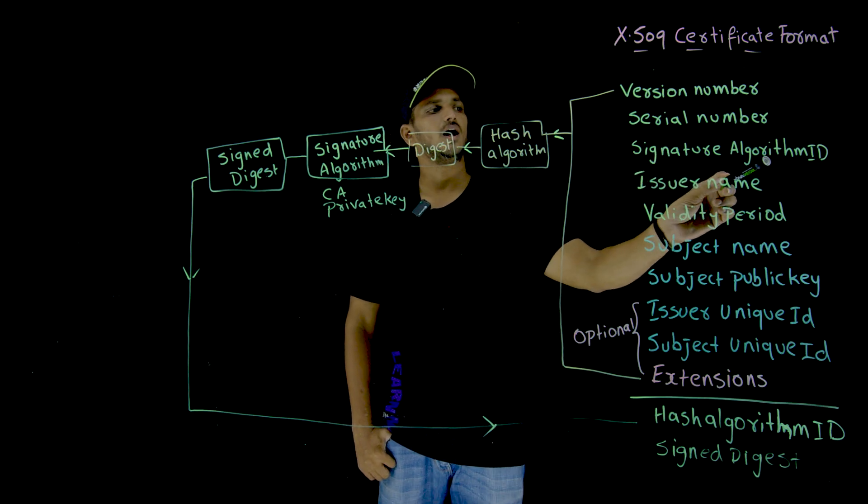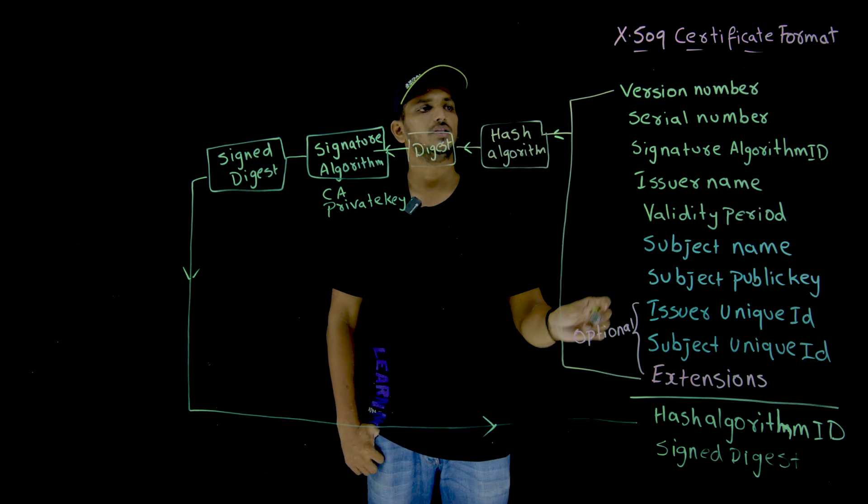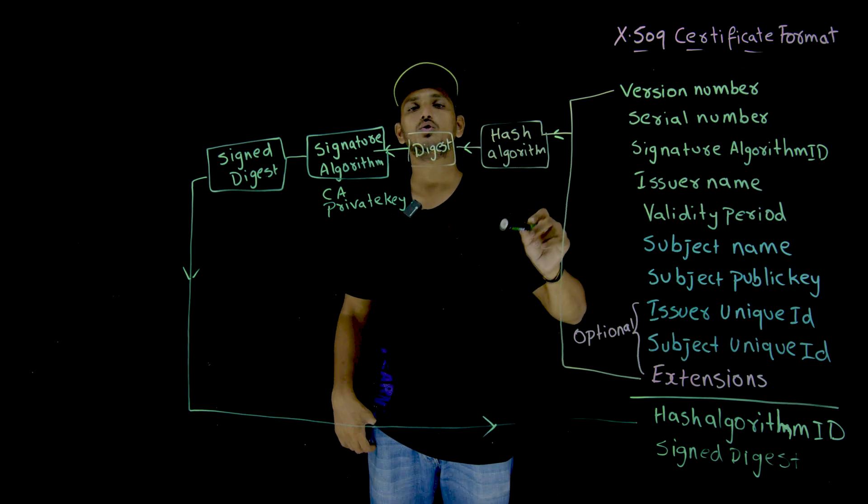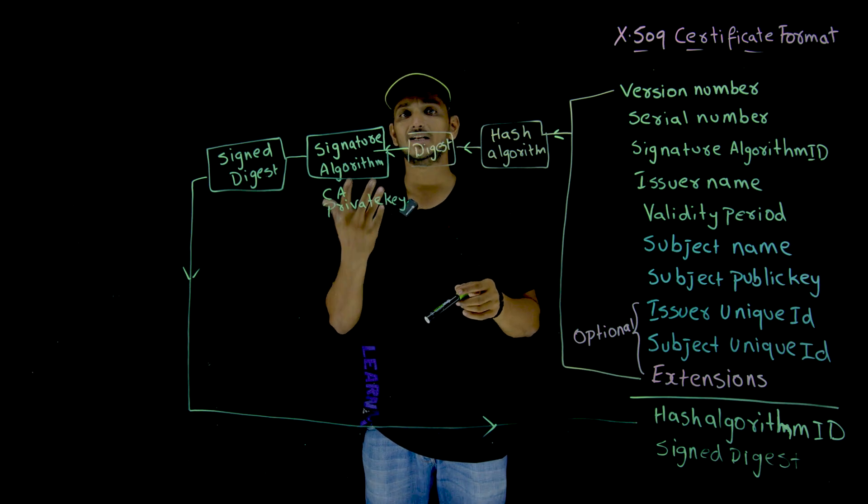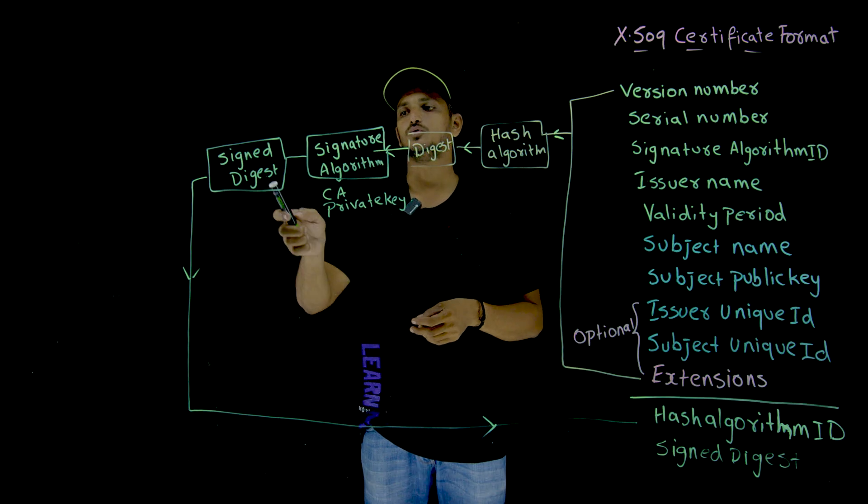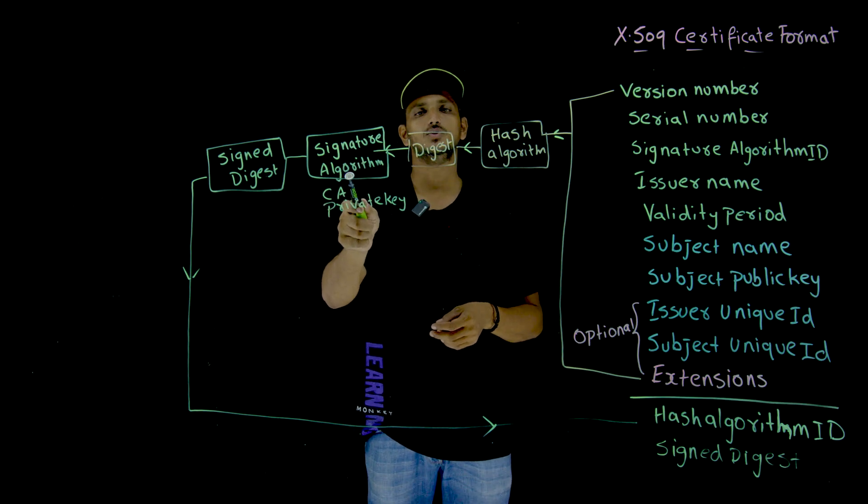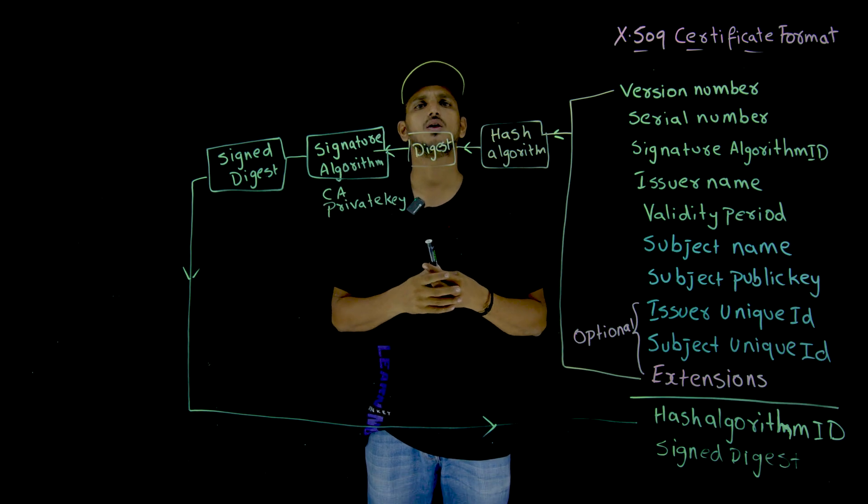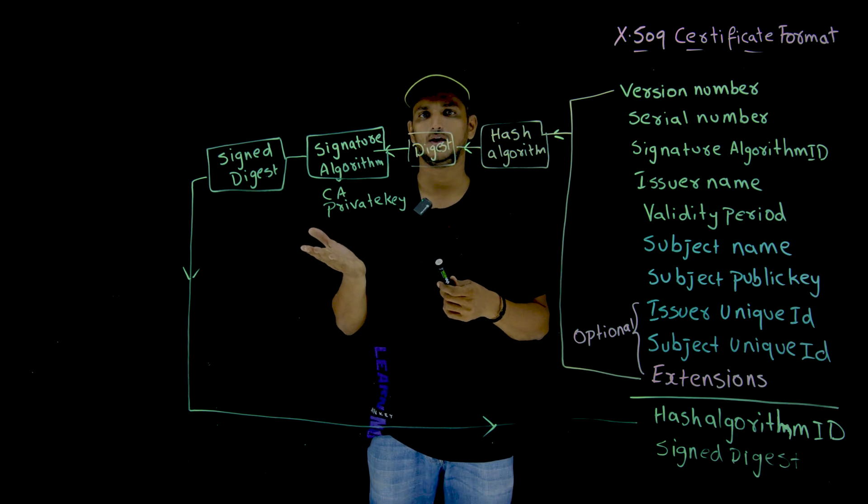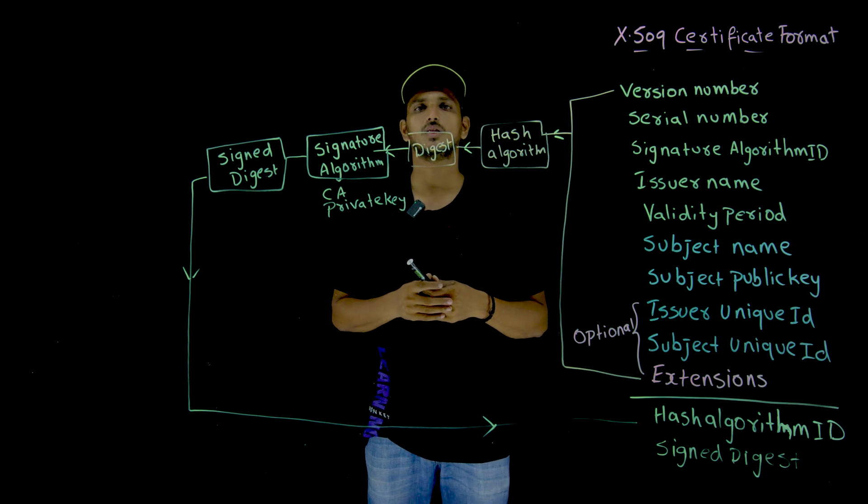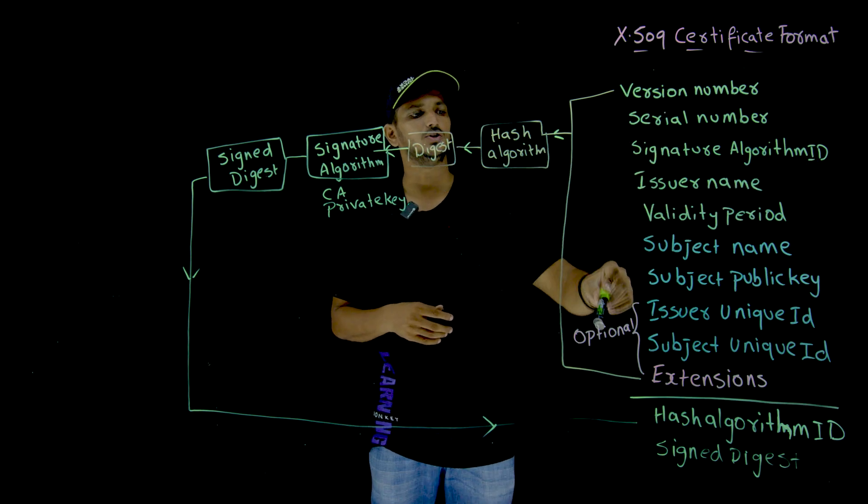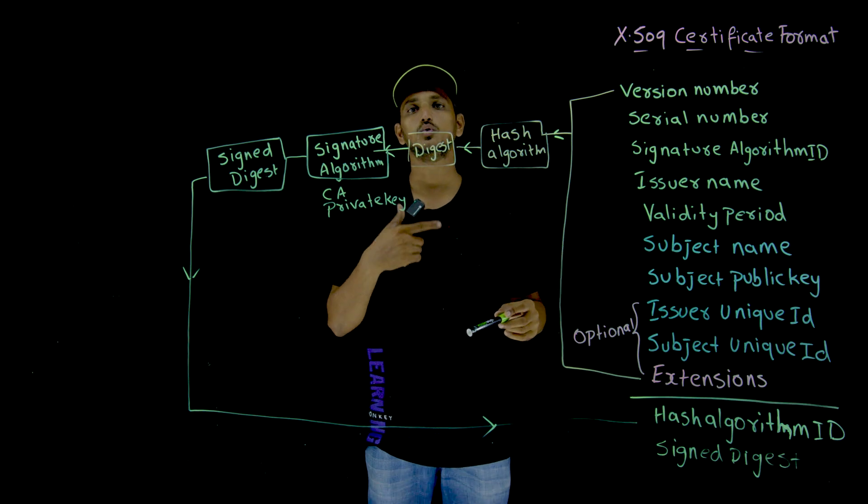Next thing is signature algorithm ID. The entire digital certificate information is going to be signed. So which algorithm we are going to use for the signature algorithm. There are multiple algorithms, RSA, digital signature algorithm or elliptic curve signature algorithm like that. So we have to provide that ID, which algorithm it has been using in order to do the signature.